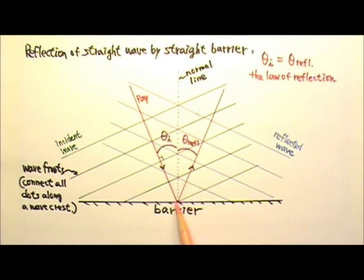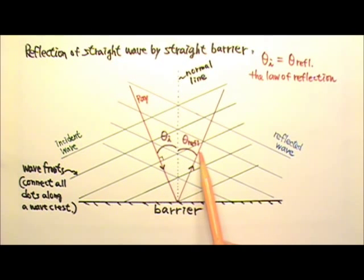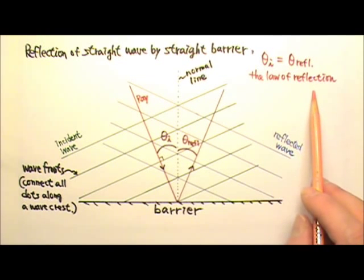Let's look at this normal line. Normal means perpendicular. And the normal line is perpendicular to the barrier. The angle between the incident ray and the normal line is called the angle of incidence. And the angle between the reflected ray and the normal line is called the angle of reflection. These two angles are always the same. That's what we call the law of reflection. You can see this demonstration if you follow the link at my website for Ripple Tank Experiment, Reflection of Straight Wave by Straight Barrier.